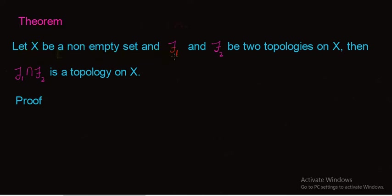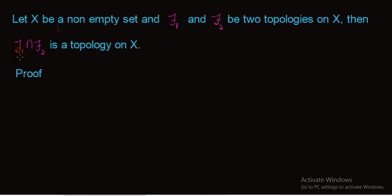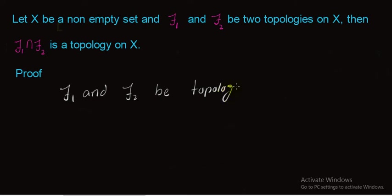Let X be a non-empty set and τ1 and τ2 be two topologies on X. Then τ1 ∩ τ2 is a topology on X. So we prove that the intersection of τ1 and τ2 forms a topology on X. For this, we assume that τ1 and τ2 are topologies on non-empty set X.